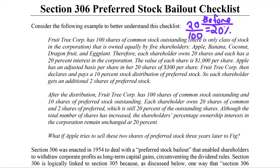The value of each share is $1,000 per share, so the corporation is valued at 100 shares times $1,000, equaling $100,000 before the stock distribution. Apple has an adjusted basis per share of $300 in her 20 shares of common stock, giving a total basis of $6,000 — calculated as $300 per share times 20 shares.